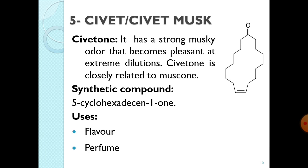Civetone has a strong musky odour that becomes pleasant at extreme dilution. Civetone is closely related to muskone, which is why civet is also called civet musk. The chemical structure of civetone shows a 17-carbon chain ketone structure, given for your reference.